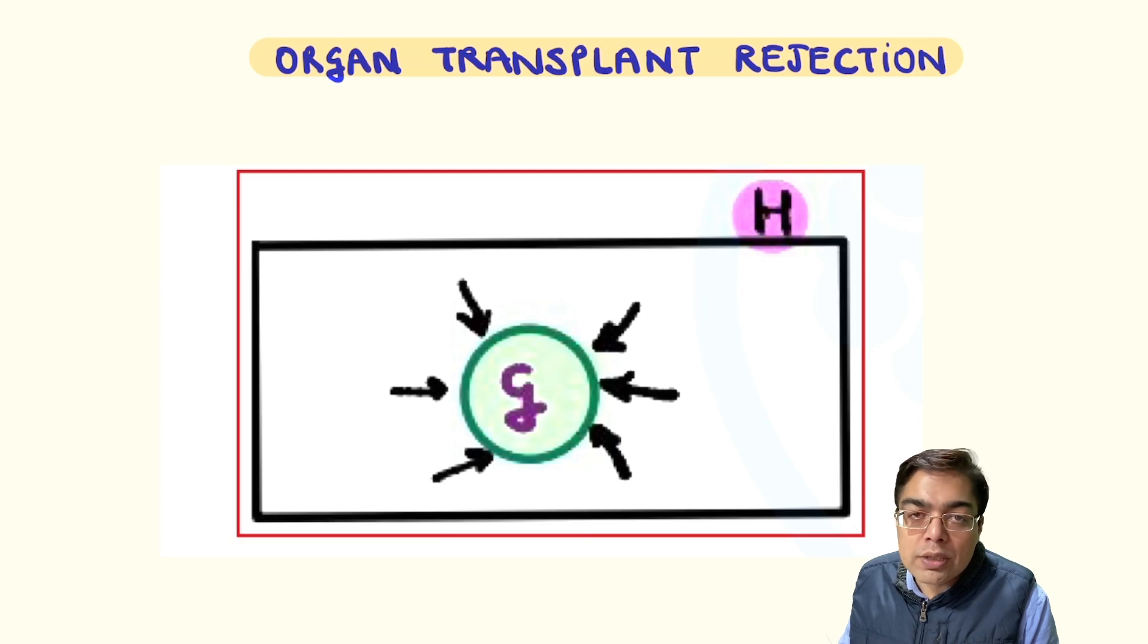If that takes place in a really short span of time, it's given the name of a hyperacute transplant rejection, which is an example of a type 2 hypersensitivity reaction.